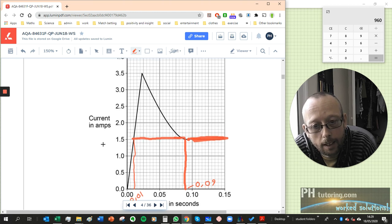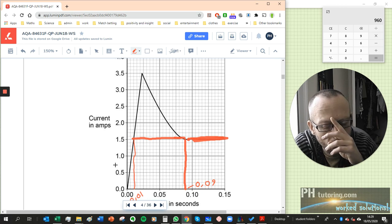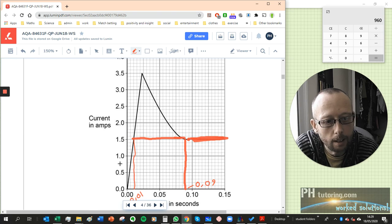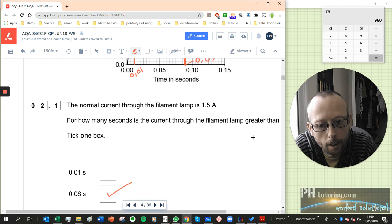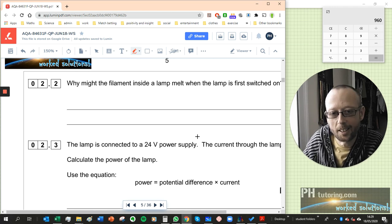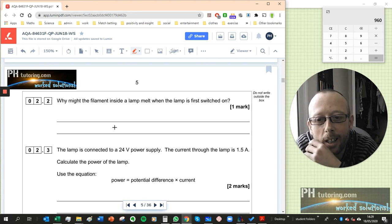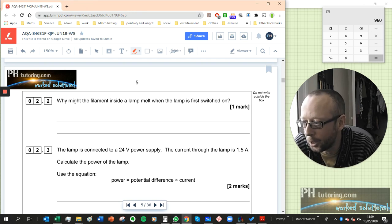Incidentally, the reason why this graph explains why often your light bulbs will blow just as you turn them on, if the filament inside the lamp is getting really worn down, you can see just as you turn it on you get this shoot of current, and so that's why it's much more likely to blow at that point than once it's been on for a while. Okay let's continue. Why might the filament inside the lamp melt when a lamp is first switched on? Okay, so I've just told you the answer.